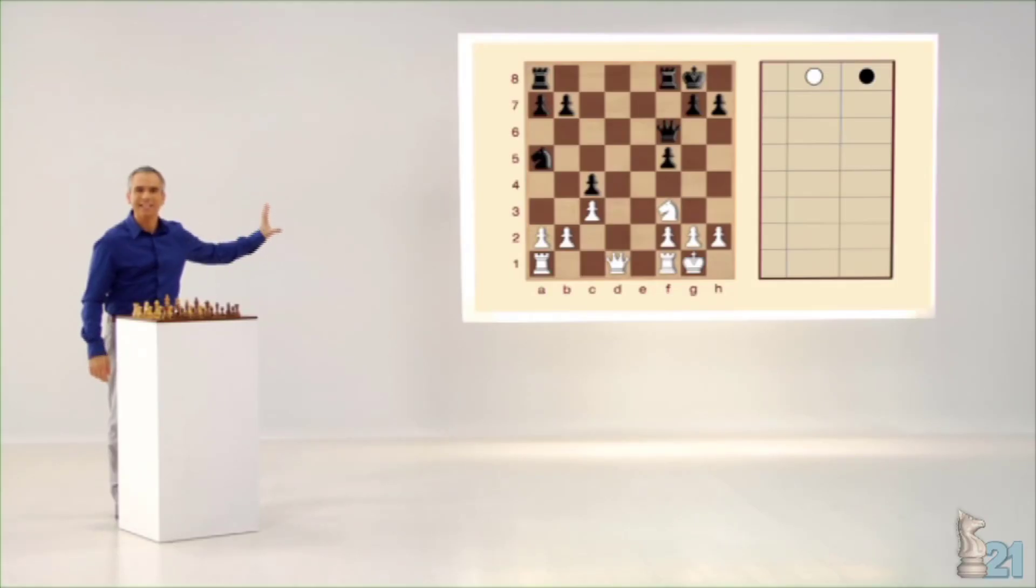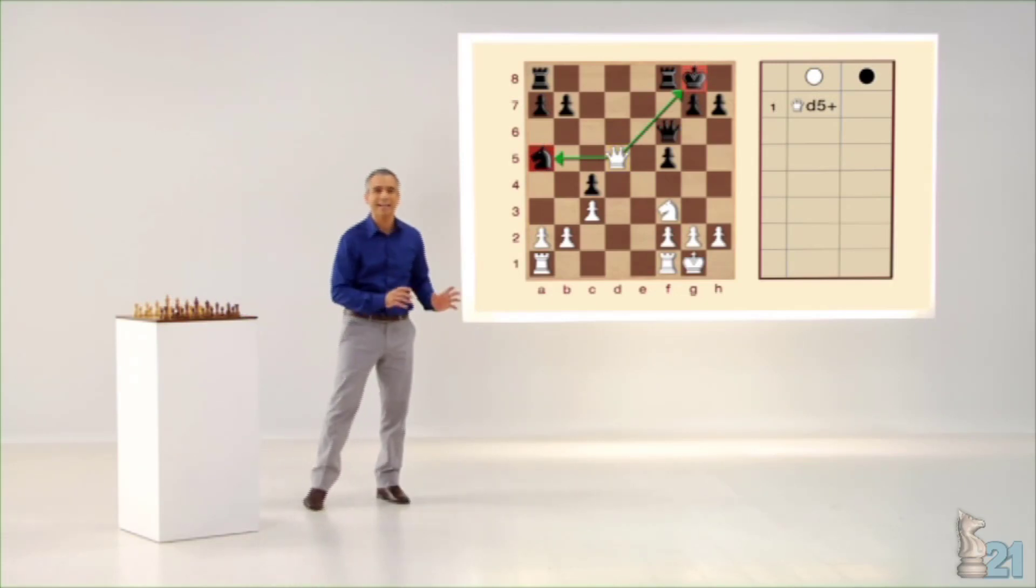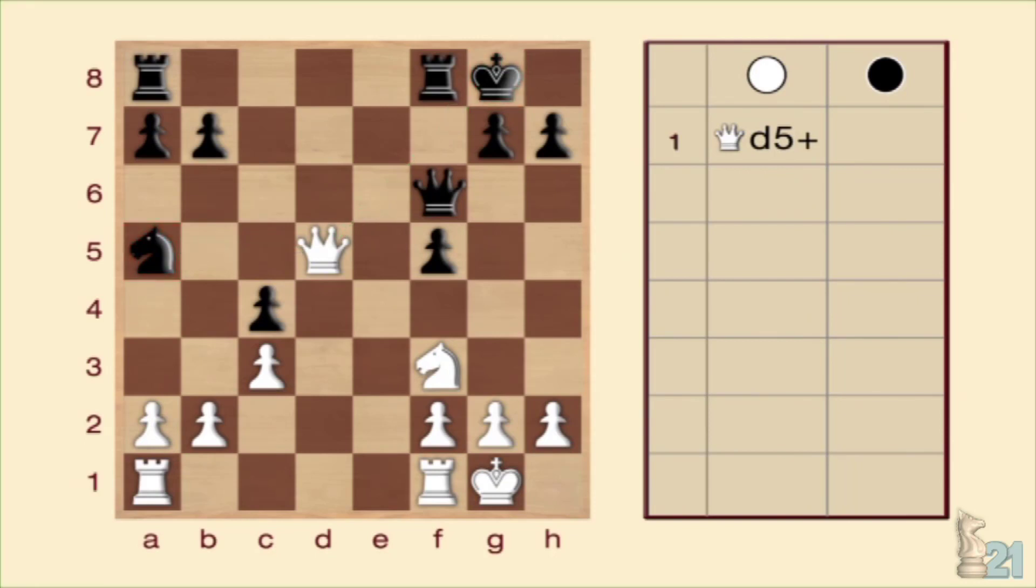Observe this situation where the blancs make a dame with dame a d5. It is a double. At the same time, it attacks the dame that is in a5. The dame with dame cannot be obviated, so the negras are forced to move. This way, the blancs can capture the dame.